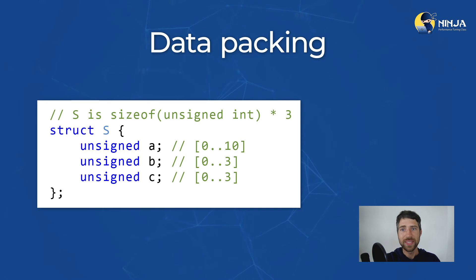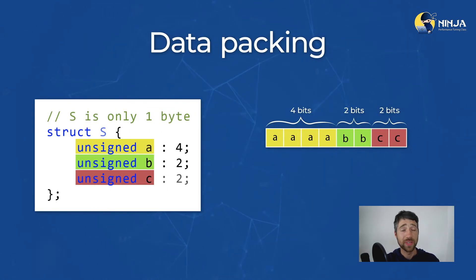Similarly, B and C can be encoded using only 2 bits of storage instead of 4 bytes. We can express our intent to pack the members of struct S by using bitfields, as shown on the screen. This will make objects of struct S occupy only a single byte of memory.